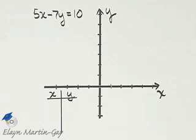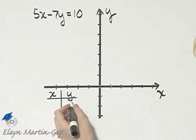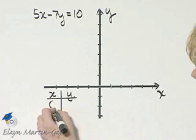How do we graph this linear equation in two variables? Let's find three ordered pair solutions. Let's find intercepts again. We can find the y-intercept by letting x be zero.